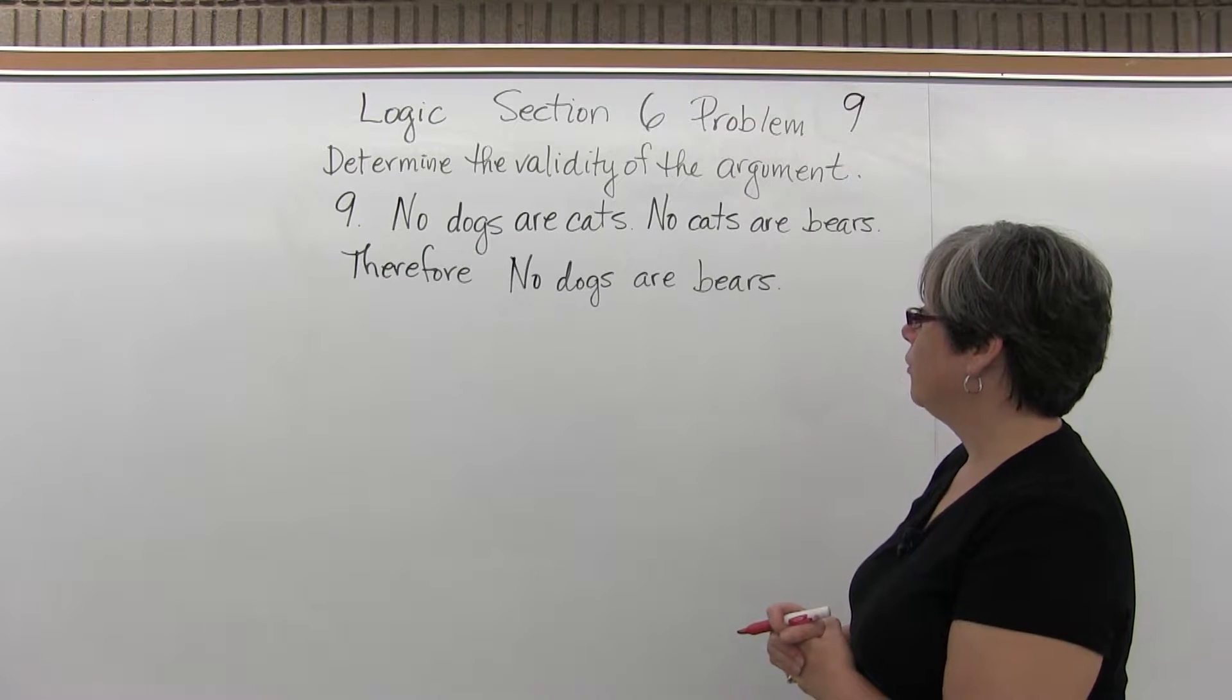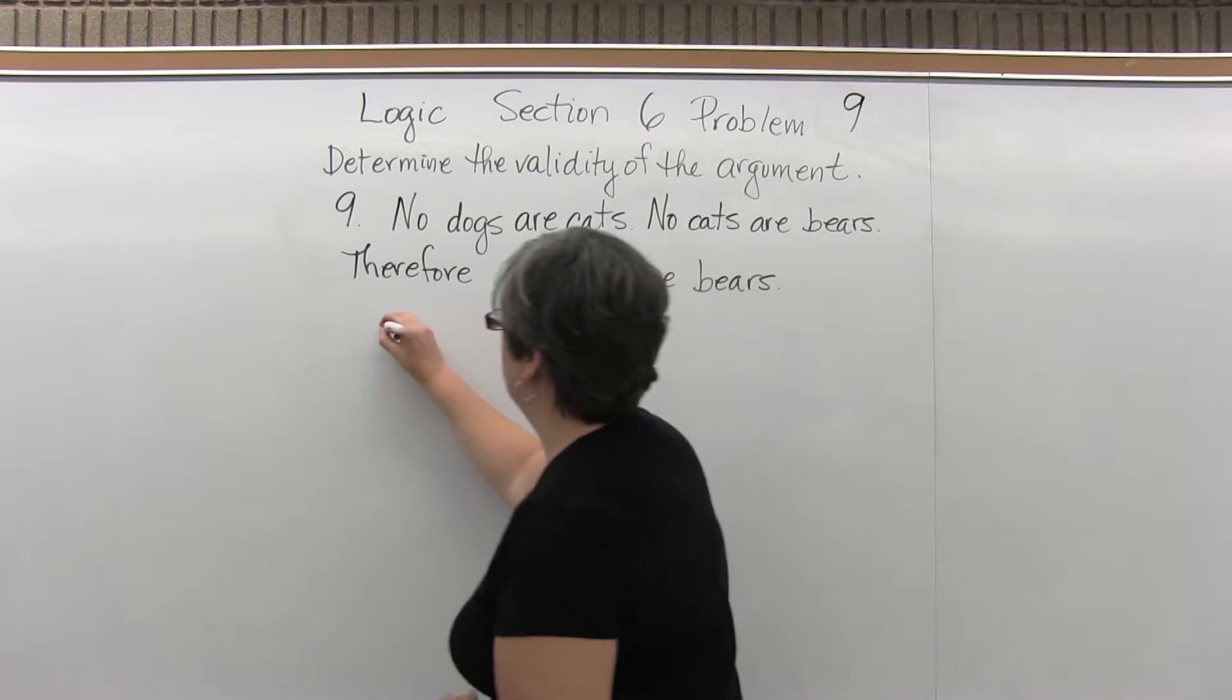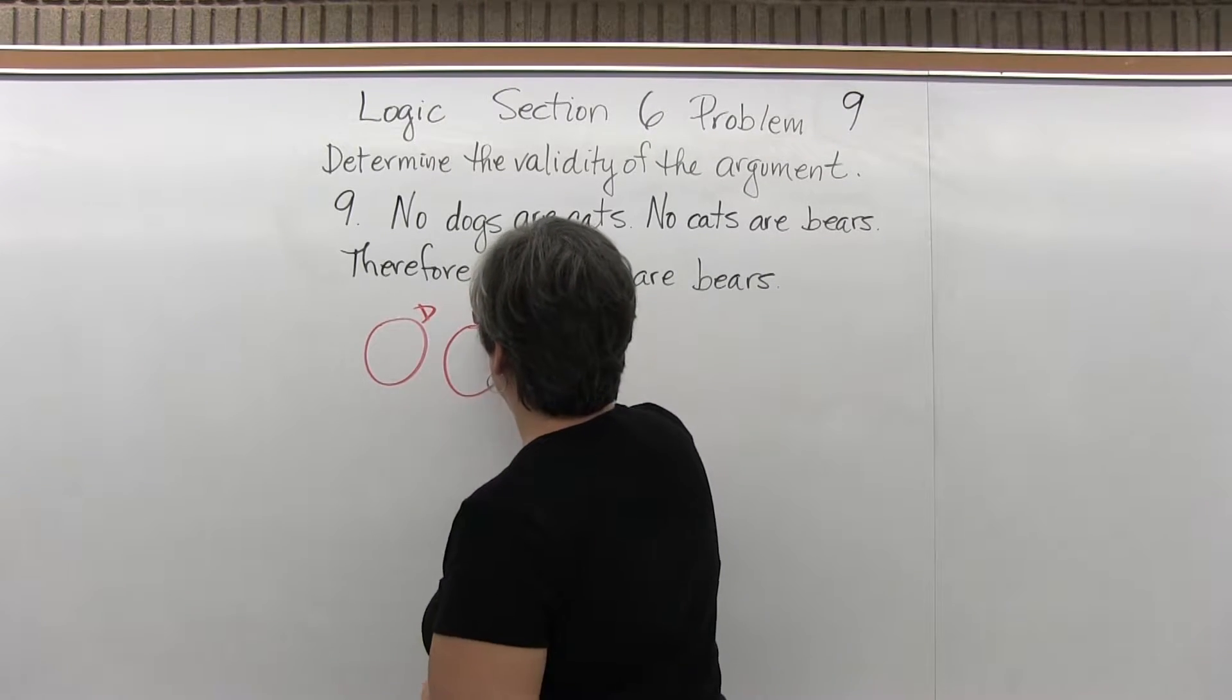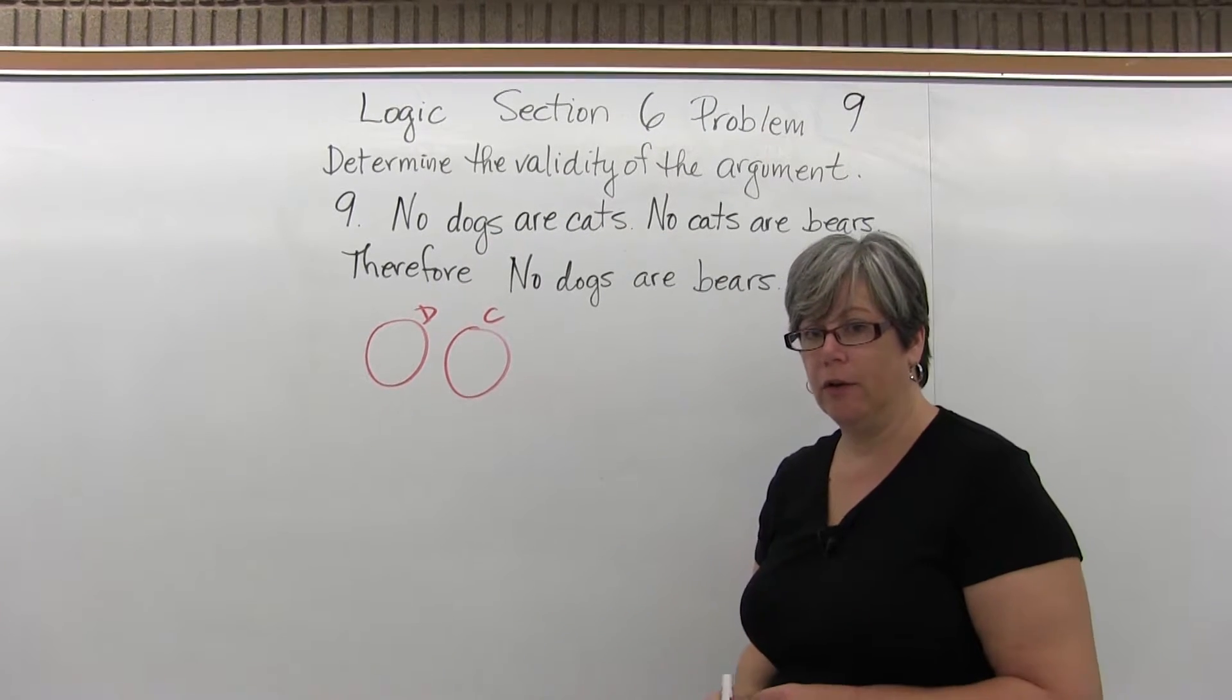So we need to draw our Euler circles. No dogs are cats means dogs and cats are in separate circles that do not overlap.